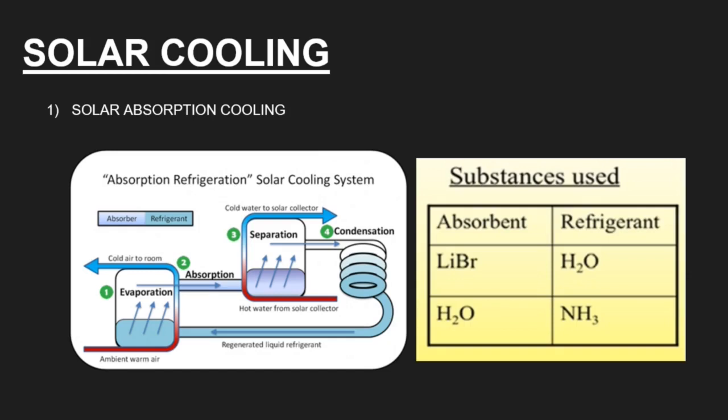First, talking about solar absorption cooling. The ambient air comes into the system of the solar cooling system and that air cools and goes out as cold air. This is done by a refrigerant which is used.